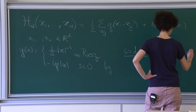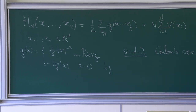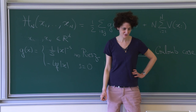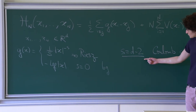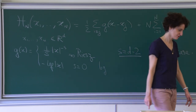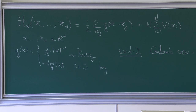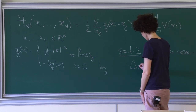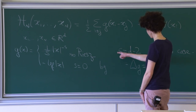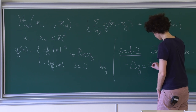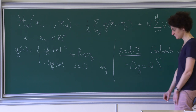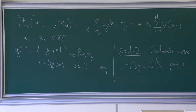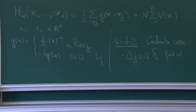There is a particularly interesting sub-case: the Coulomb case, which is when s equals d minus 2. In dimension 3, the potential is 1 over the distance; in dimension 2, it corresponds to the logarithmic case. What's important about the Coulomb kernel is that it is a fundamental solution to the Laplacian: minus-Laplacian of g equals some constant depending on dimension times the Dirac mass at the origin.